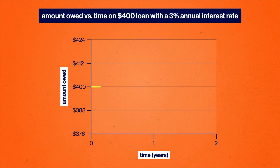When we worked out that formula, we assumed that for most of the year, the money being owed stays at exactly the same value until, at some moment, we suddenly apply the interest. Like, say we borrow $400 with a 3% annual interest rate. Our debt would stay at exactly $400 until exactly one year later when we apply the interest, and suddenly we owe $412. Now, that is how plenty of loans or investments work in real life, but it's not the only way.